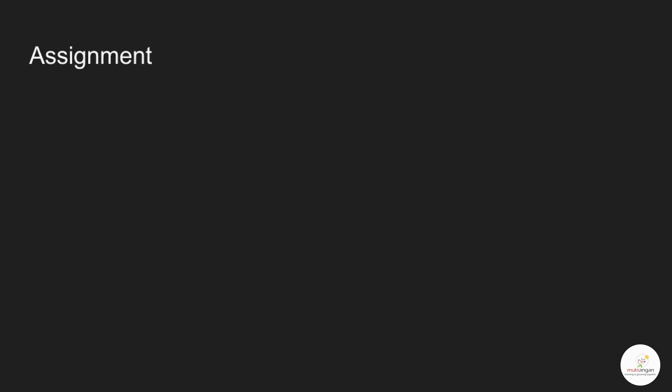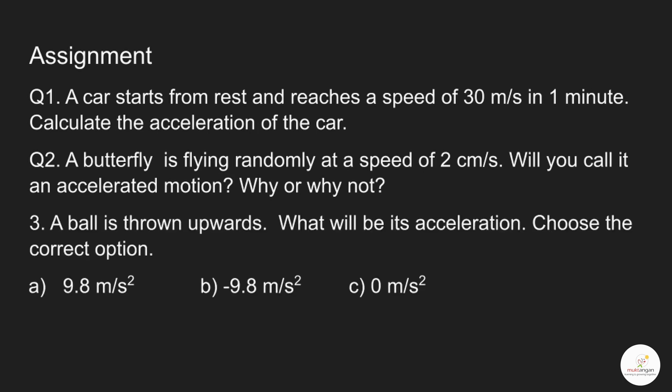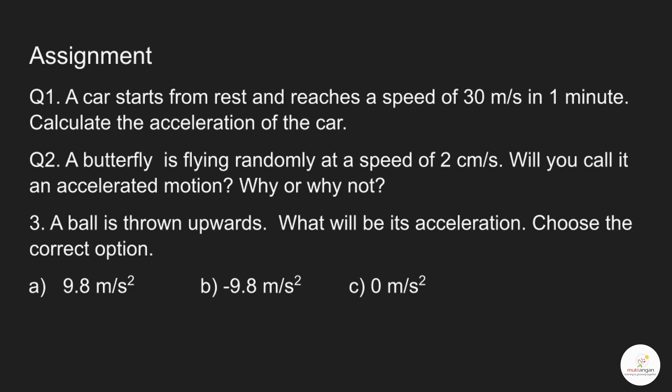Now it's time for an assignment. Question 1: A car starts from rest and reaches a speed of 30 meter per second in 1 minute. Calculate the acceleration of the car. Question 2: A butterfly is flying randomly at a speed of 2 cm per second. Will you call it an accelerated motion? Why or why not? Question 3: A ball is thrown upwards. What will be its acceleration? Choose the correct option: A) 9.8 meter per second squared, B) −9.8 meter per second squared, C) 0 meter per second squared. I hope this video helped you understand the concept of acceleration.